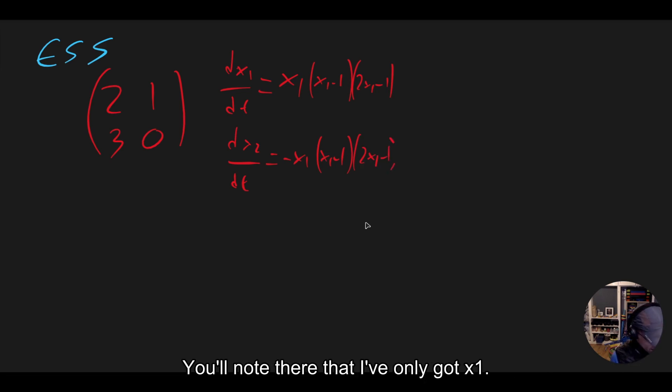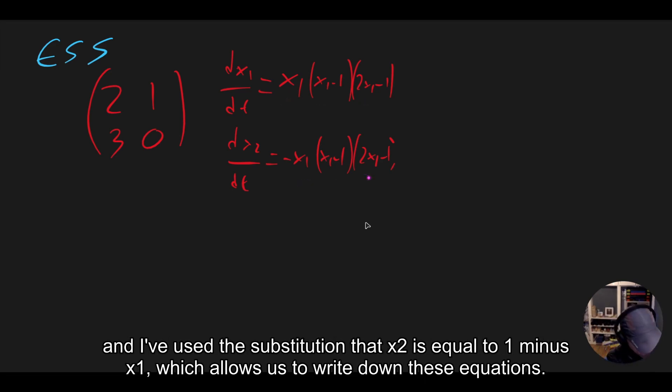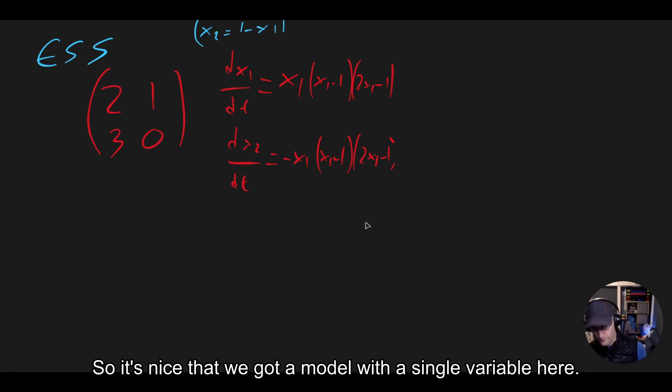You'll note there that I've only got x1. And that's because what I did is I've taken the work to write down the replicator dynamics equation and I've used the substitution that x2 is equal to 1 minus x1, which allows us to write down these equations so it's nice that we've got a model with a single variable here.